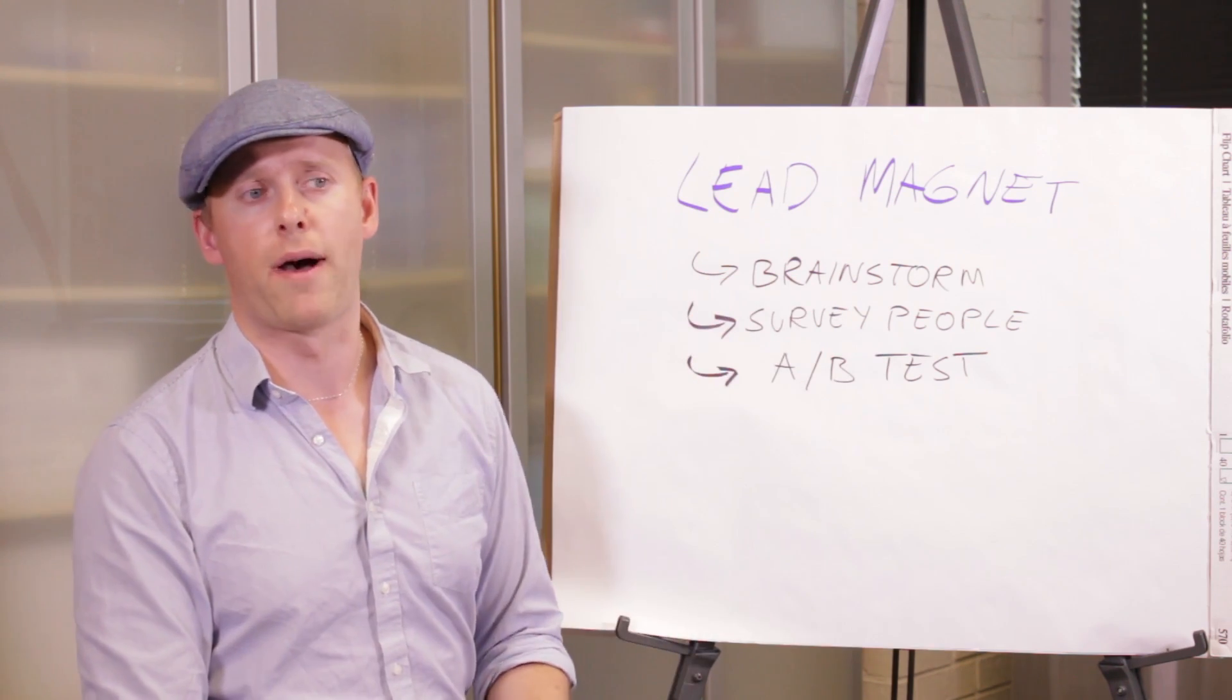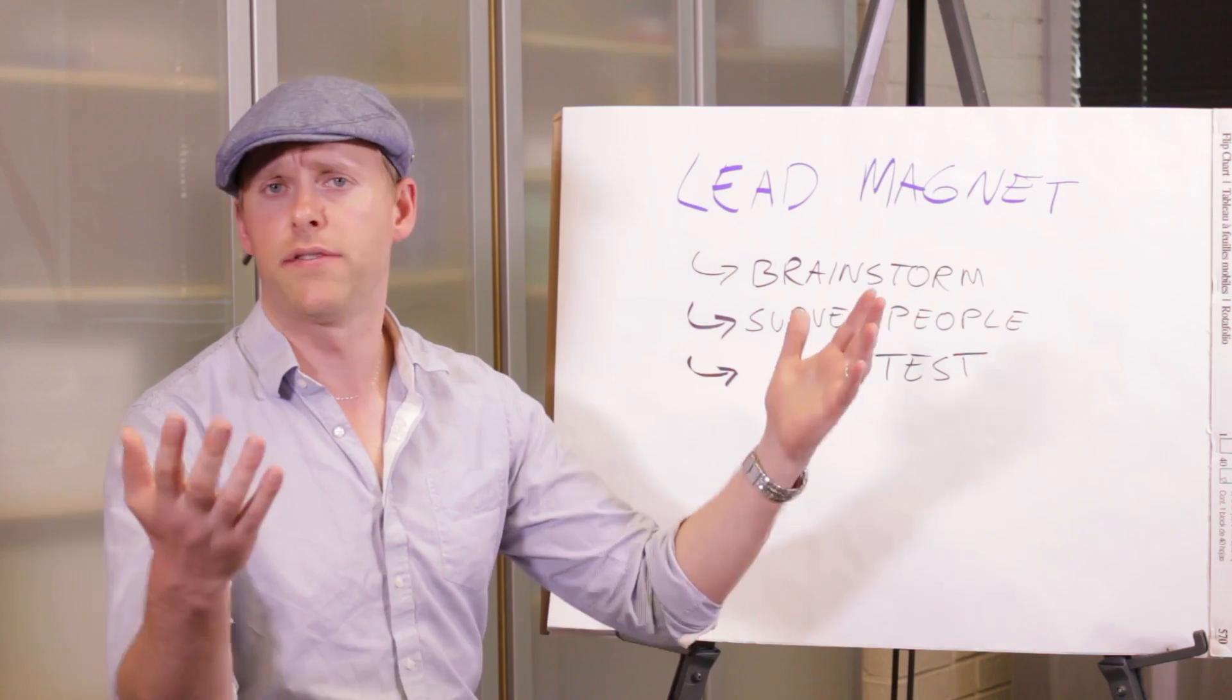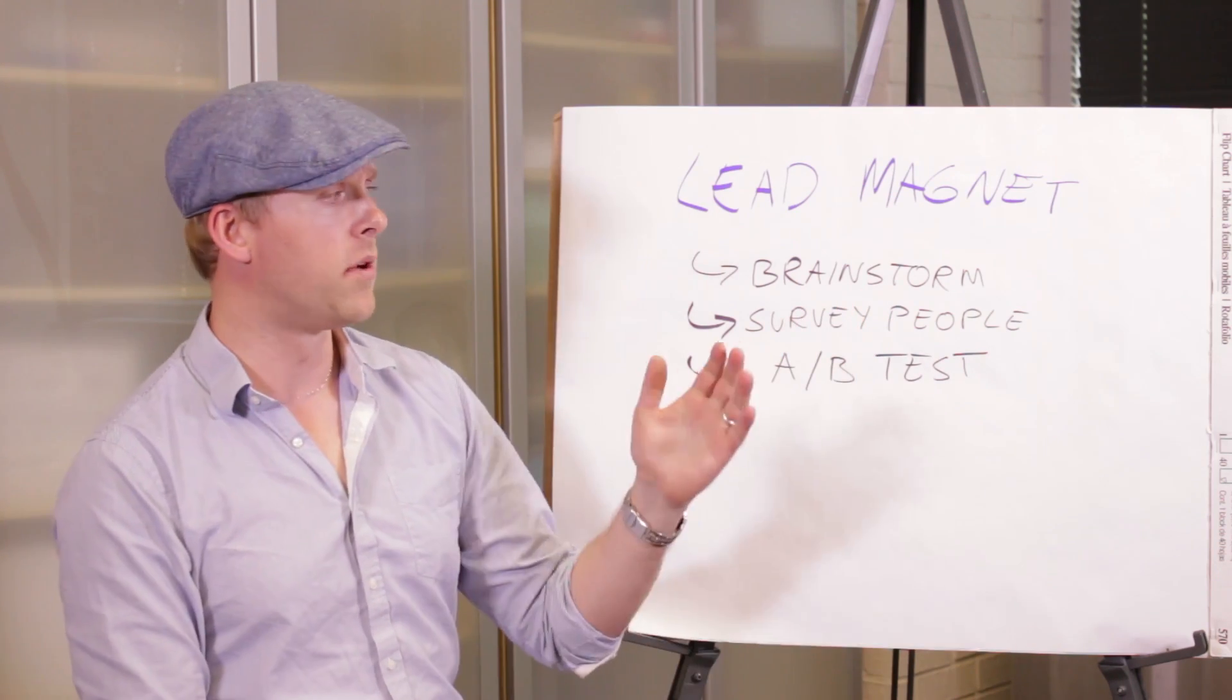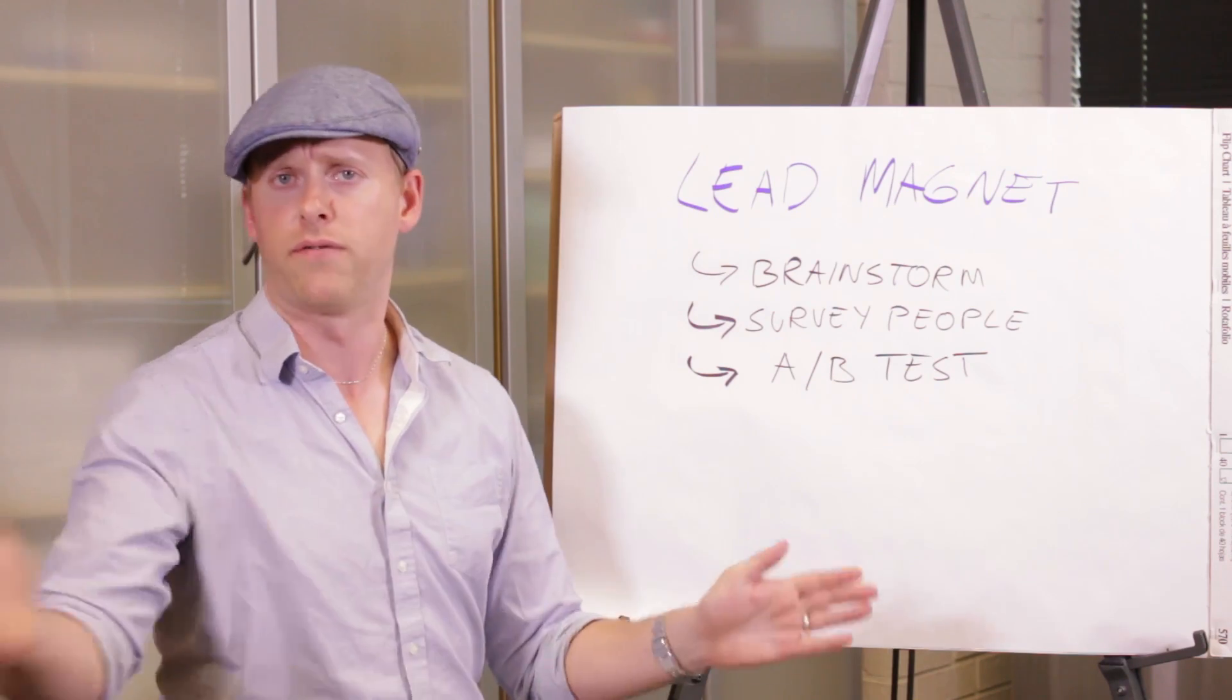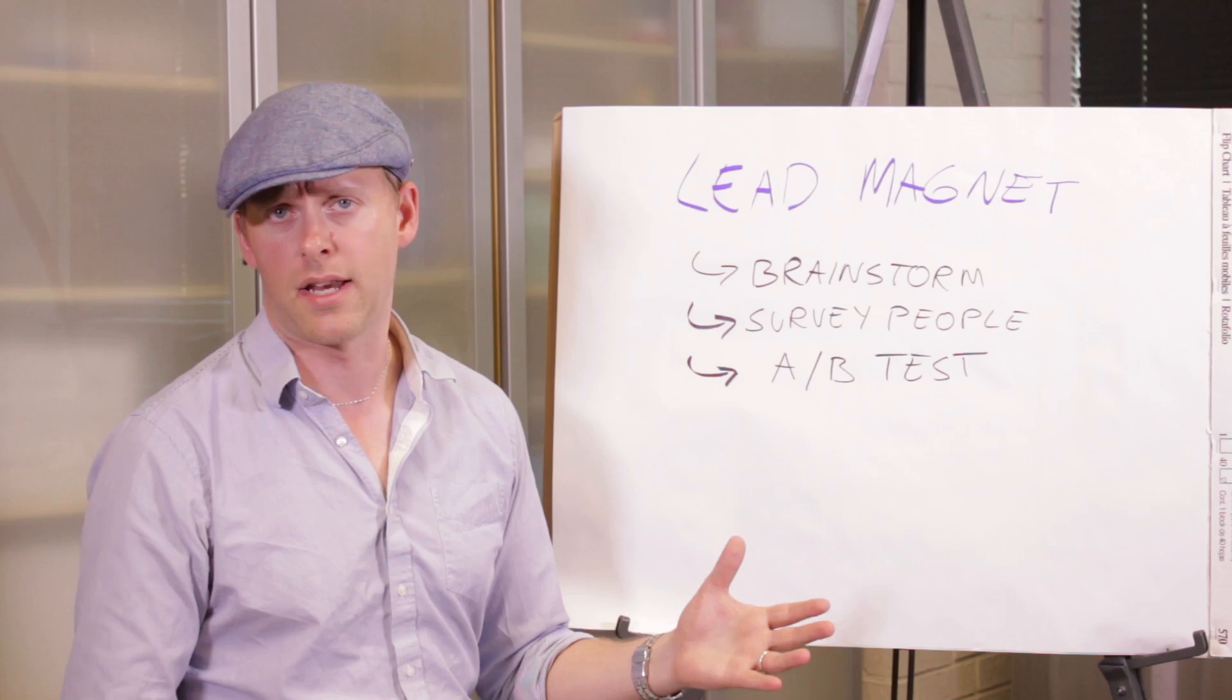Now, three good ways to go about it. First, you brainstorm 10 different ideas. What do people want? Maybe they want coupons, maybe they want a free ebook about something, maybe they want a 10 part video series about something. So you come up with your 10 best ideas.